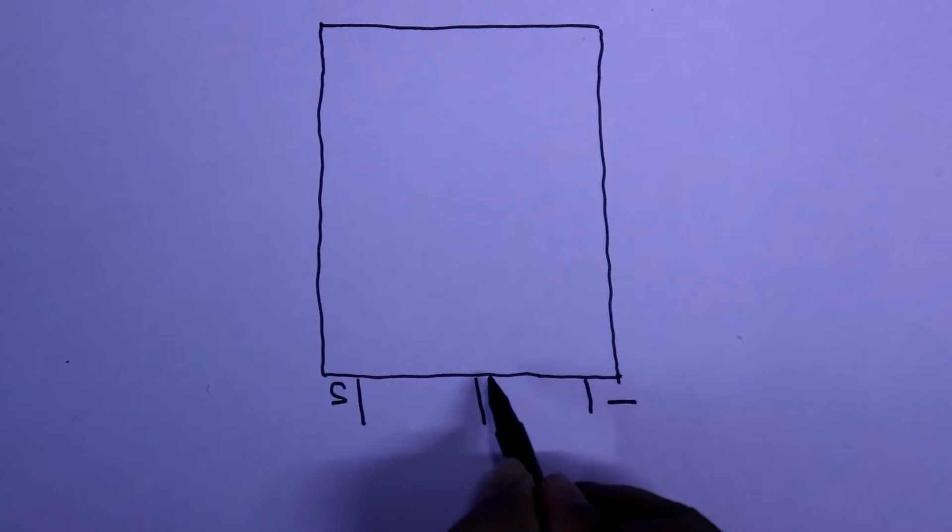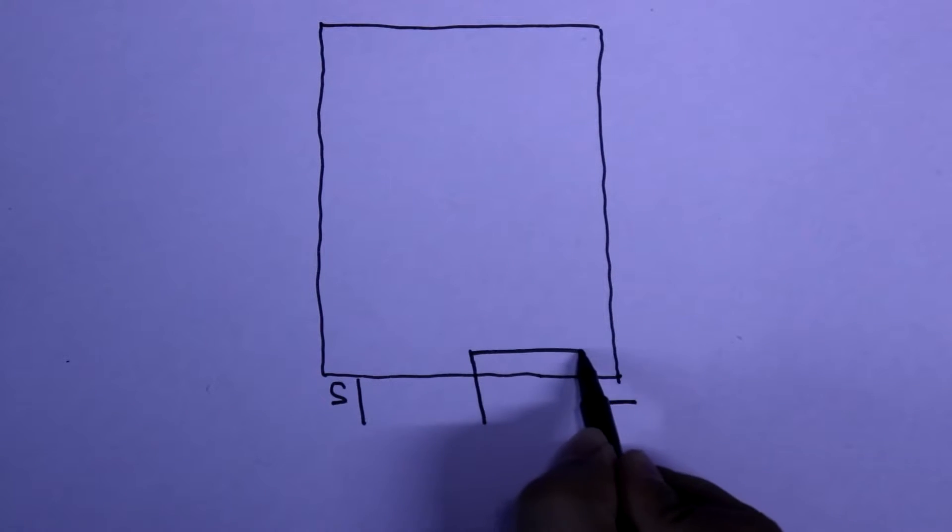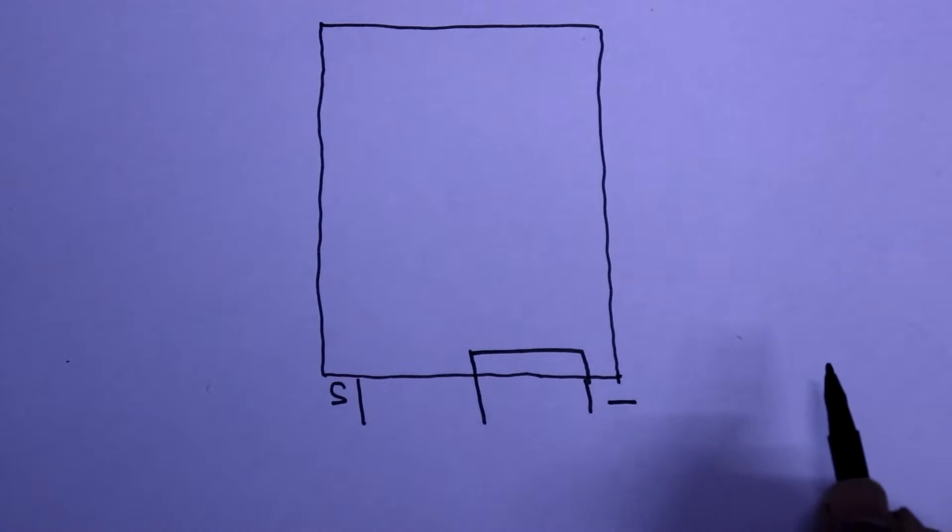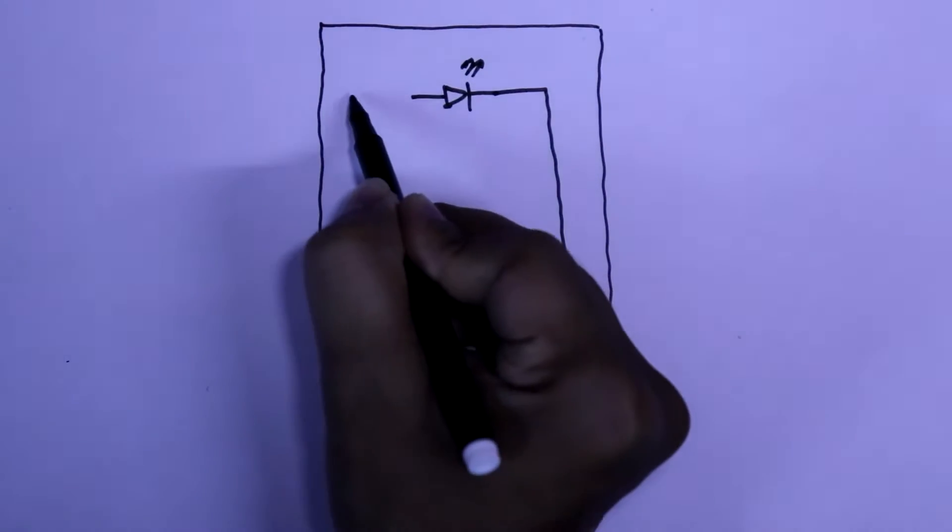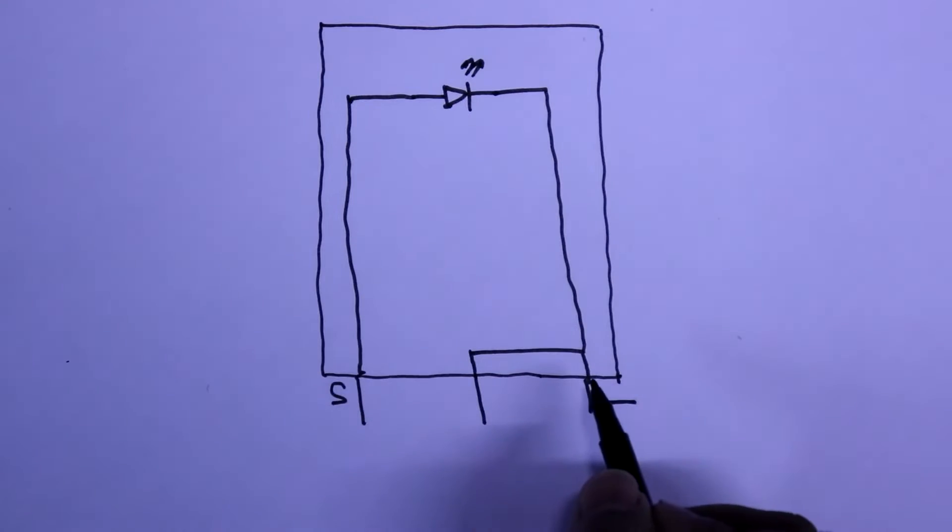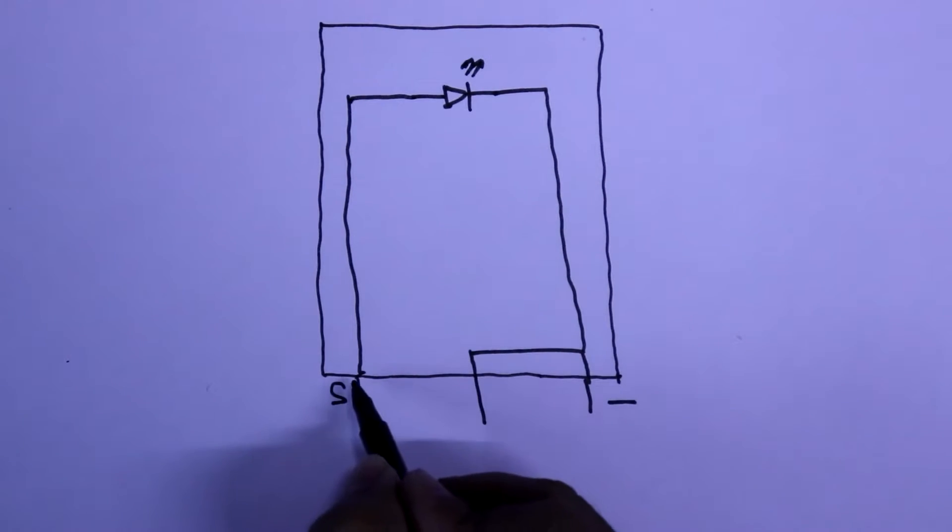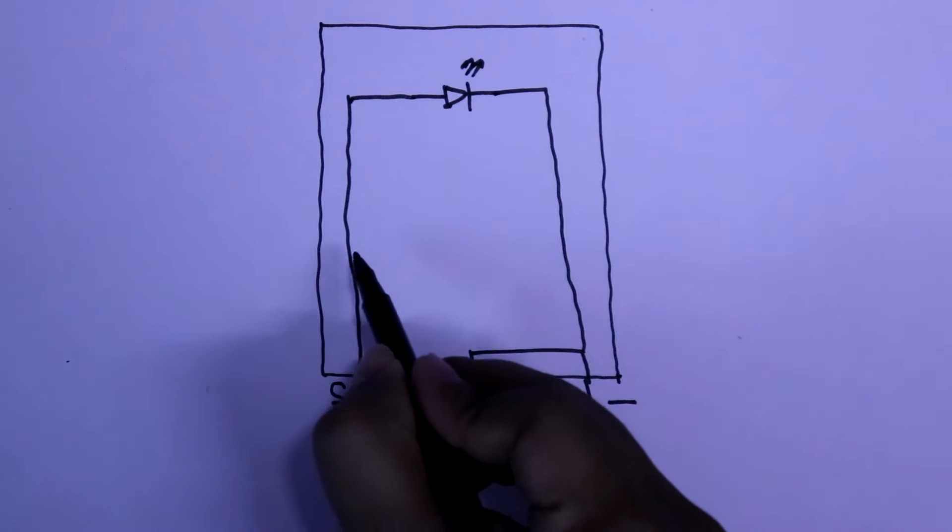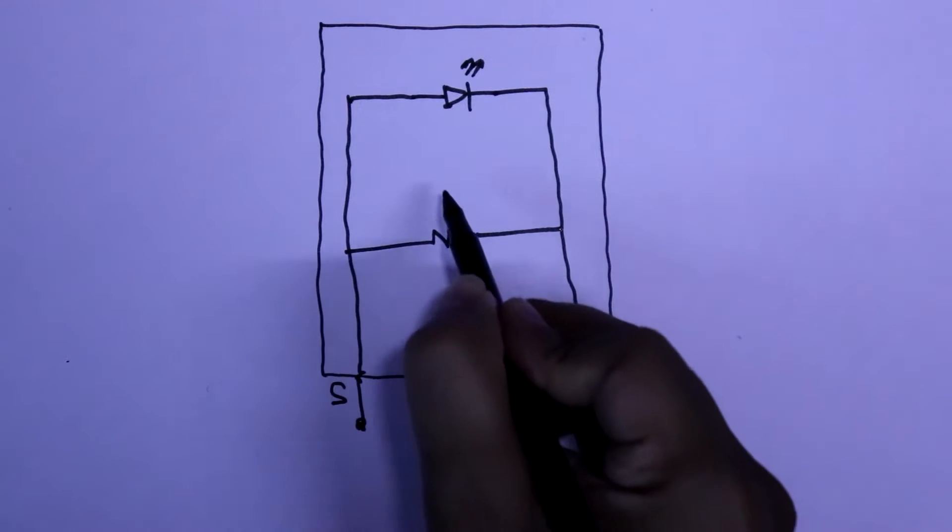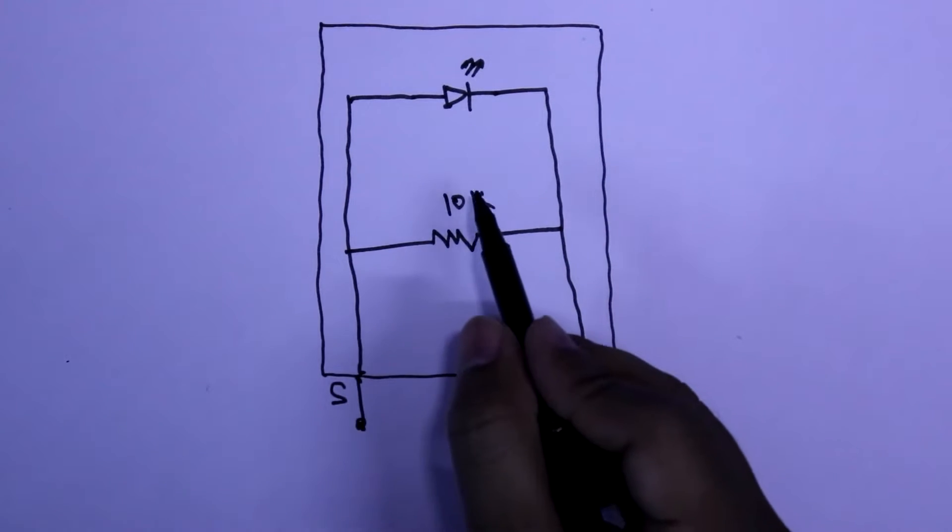In this module, these two pins are connected together like this. And the LED is connected in between these two pins. So we will connect the positive supply to this pin and negative to this pin or middle pin. Both are same. And the resistor is connected in between these two pins. It is 10k.